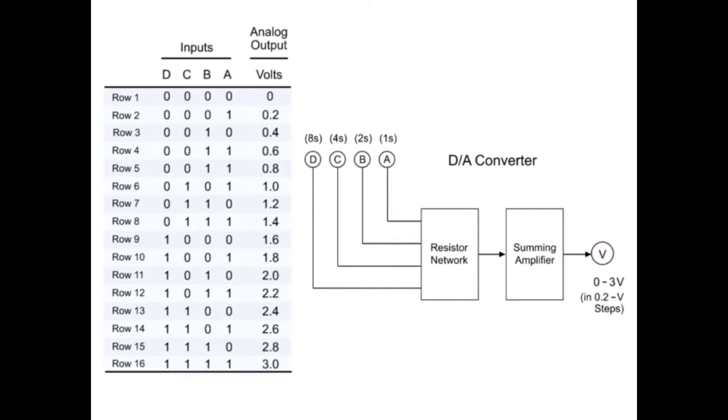Keep in mind that the inputs going from A to D have increasing significance. The resistor network will account for these input differences by using a specific arrangement of resistors to modify the digital signal. The summing amplifier receives the output voltage from the resistor network and amplifies it to the expected voltages.